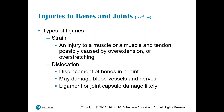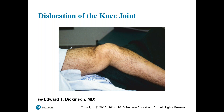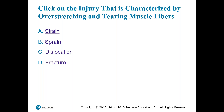A dislocation is a displacement of bones in a joint and can damage blood vessels and nerves. A strain is an injury to the muscle mass. We treat these the same way: stabilize, check CMS, and splint in place. For a dislocated knee joint, I'm going to check CMS, palpate around the knee, look for any other types of injuries, then splint and provide pain control with cold packs.